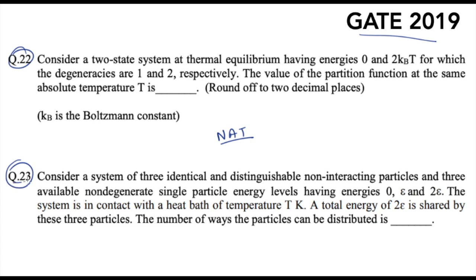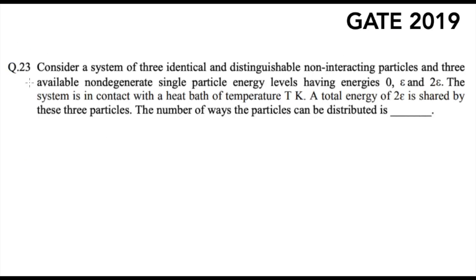I'll be taking question number 23 first and later question number 22. The question says: consider a system of three identical and distinguishable non-interacting particles. There are three available non-degenerate single particle energy levels having energies of 0, epsilon, and 2 epsilon. The system is in contact with a heat bath of temperature T Kelvin. The total energy of 2 epsilon is shared by these three particles. The number of ways in which the particles can be distributed is — this is a basic question from statistical thermodynamics.